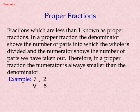Proper Fractions. Fractions which are less than one are known as proper fractions. In a proper fraction, the denominator shows the number of parts into which the whole is divided, and the numerator shows the number of parts we have taken out. Therefore, in a proper fraction the numerator is always smaller than the denominator. Examples: seven by nine, two by five.